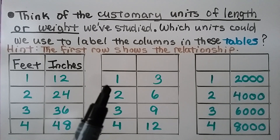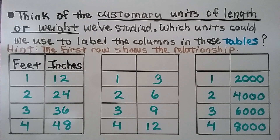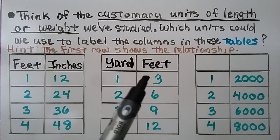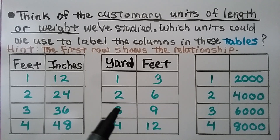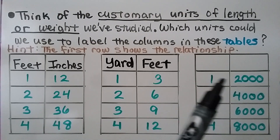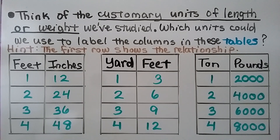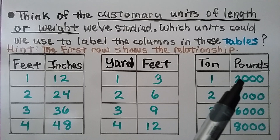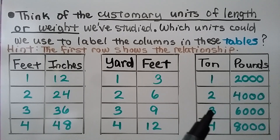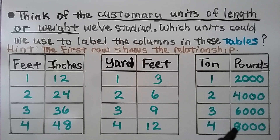For 1 and 3 in customary units, yards and feet is correct: one yard equals 3 feet, so 2 yards is 6 feet, 3 is 9, and 4 is 12. For 1 and 2,000, tons and pounds is correct: one ton equals 2,000 pounds, so 2 tons is 4,000, 3 tons is 6,000, and 4 tons is 8,000 pounds.